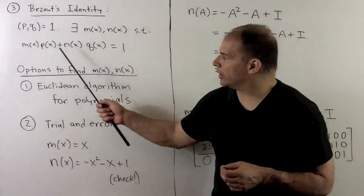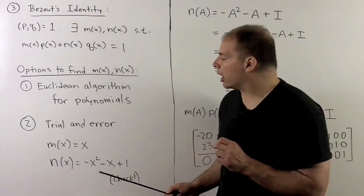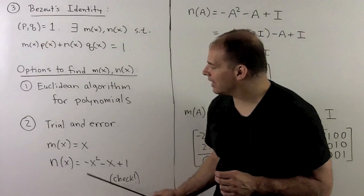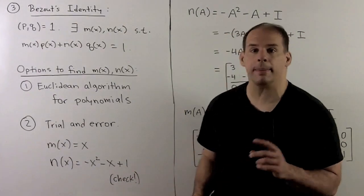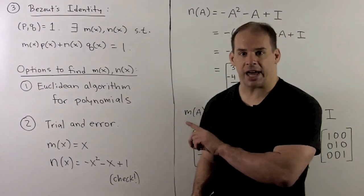Otherwise, the degrees of our polynomials are low enough that we can use trial and error. With trial and error, I find one solution: M of X equal to X and N of X equal to minus X squared minus X plus 1. You should check that.